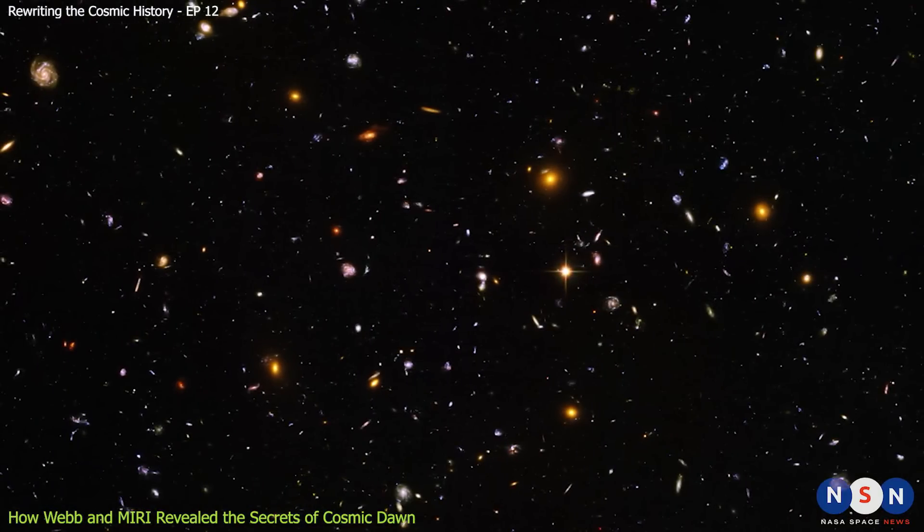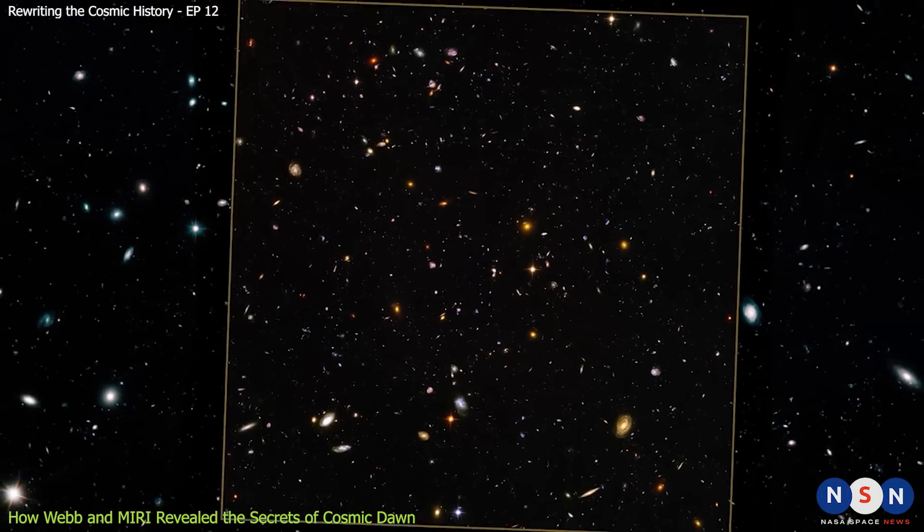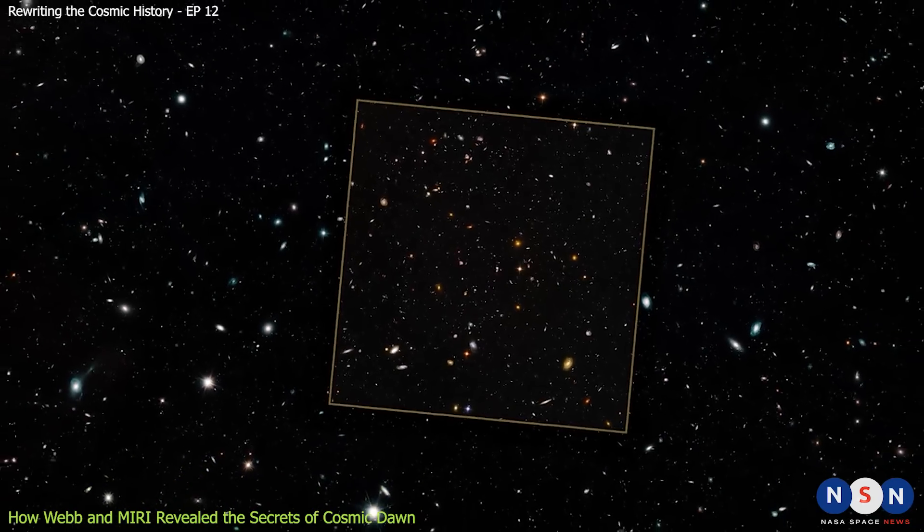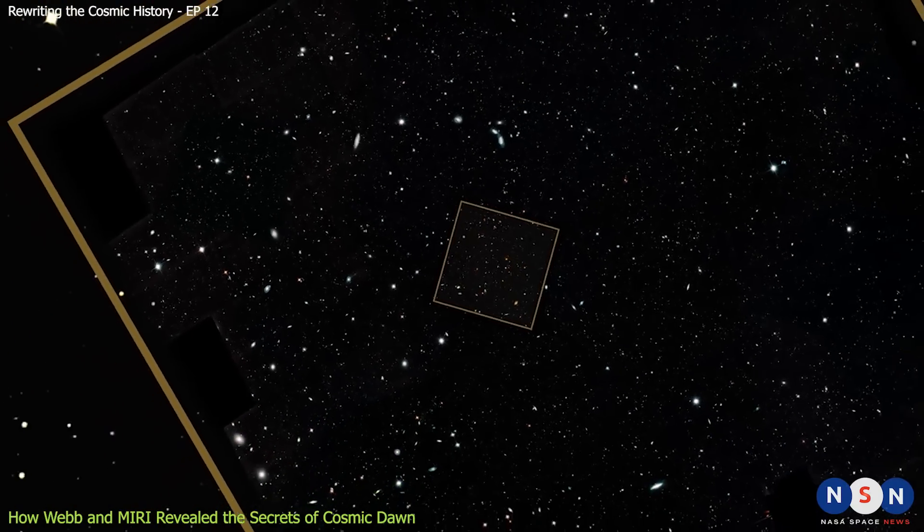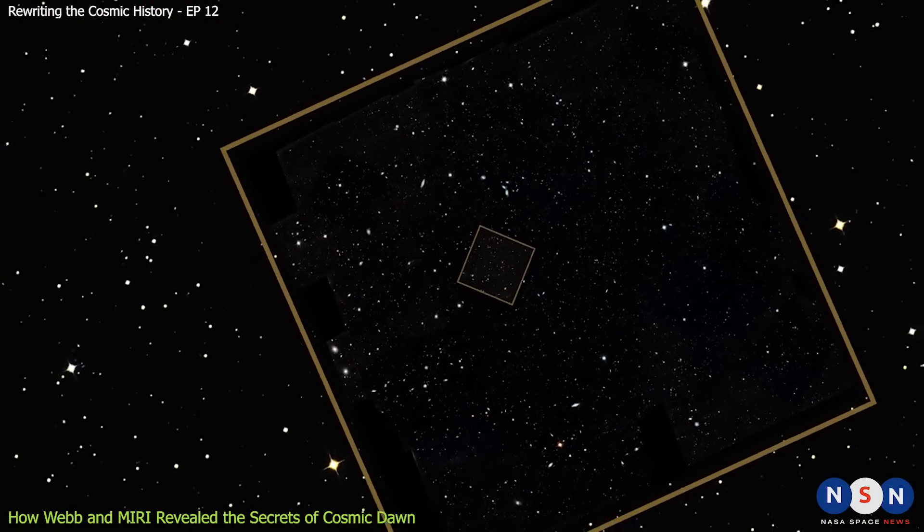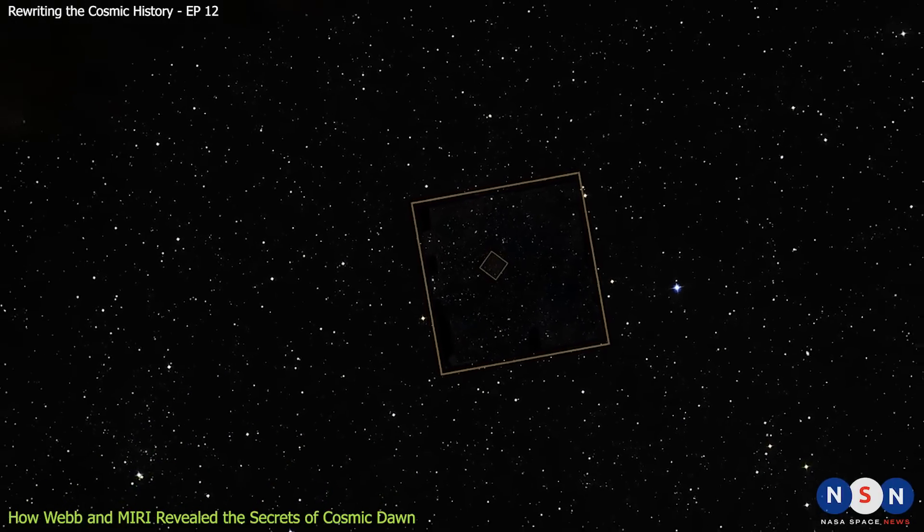One of the most famous deep field images is the Hubble Ultra Deep Field, which was taken by the Hubble Space Telescope in 2003 and 2004. The Hubble Ultra Deep Field covers an area of sky that is about one-tenth the size of the full moon, and it contains about 10,000 galaxies.